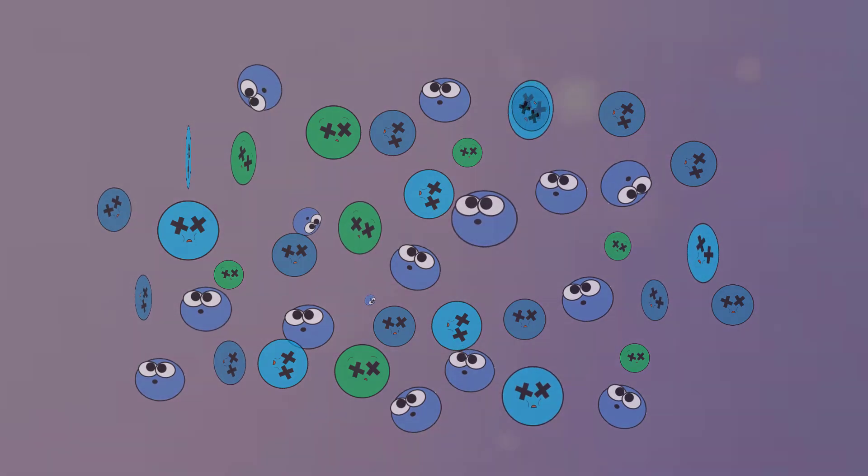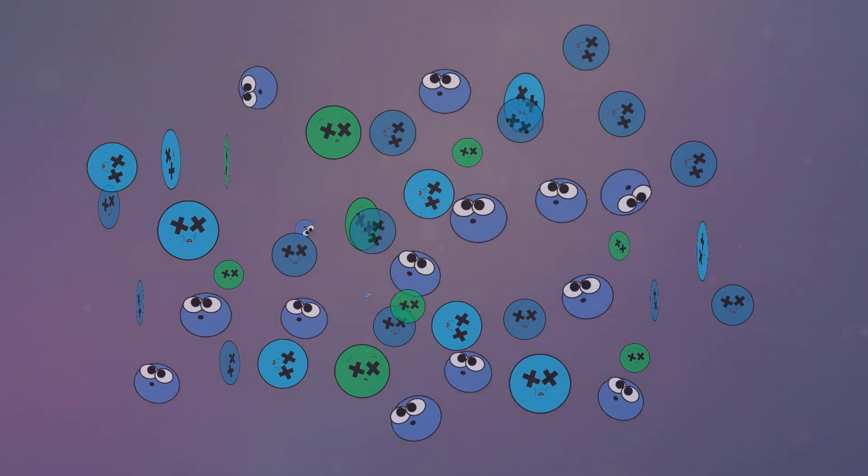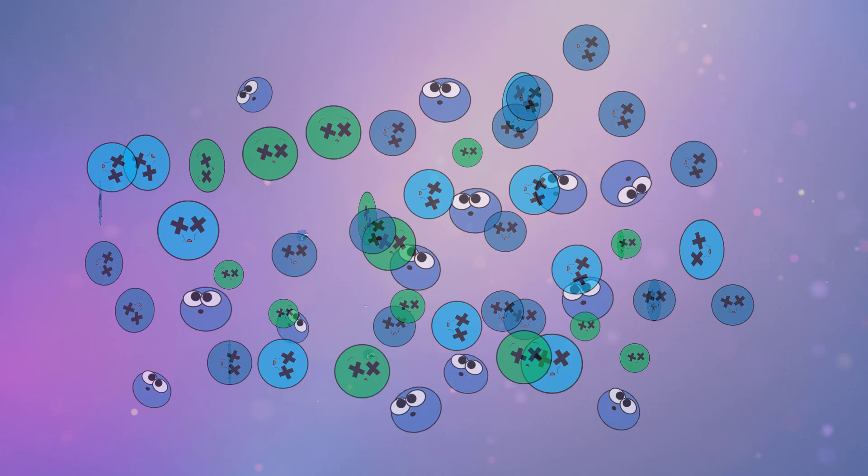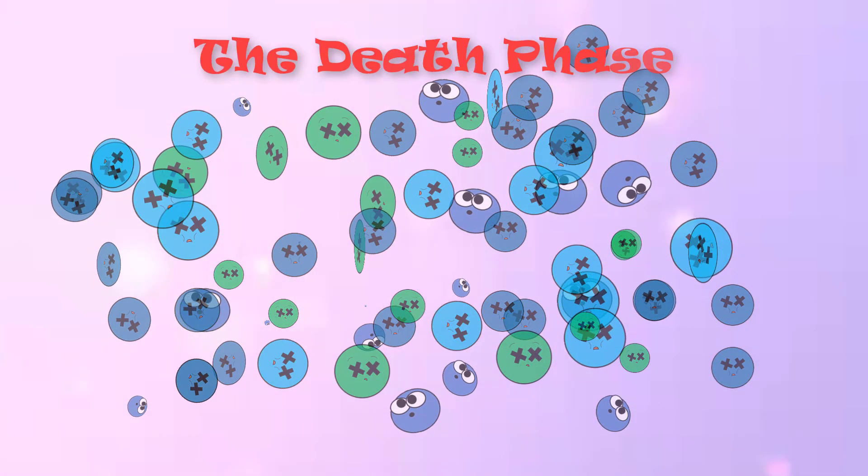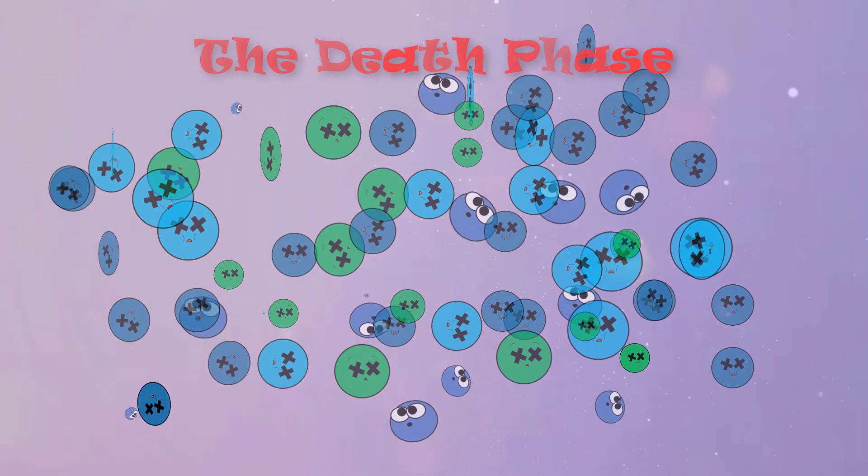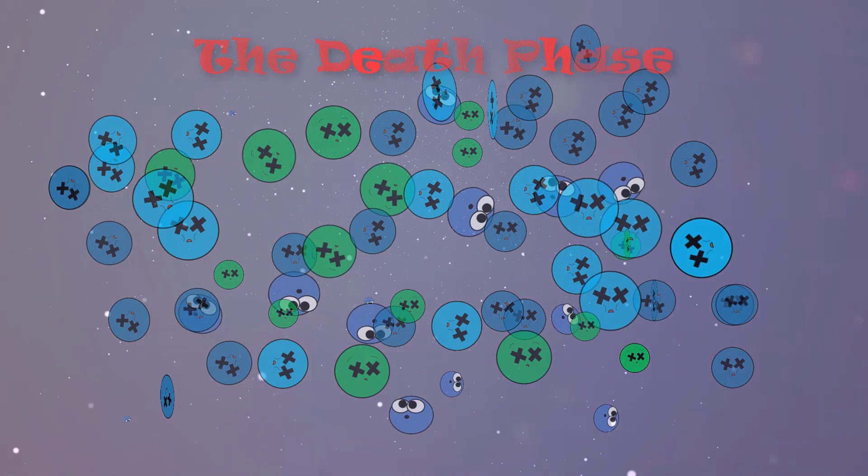After some time, the depletion of nutrition and space along with the buildup of toxins in our cell culture will cause more cells to be dying than cells that are being produced. This gives us our death phase of the bacterial growth curve.